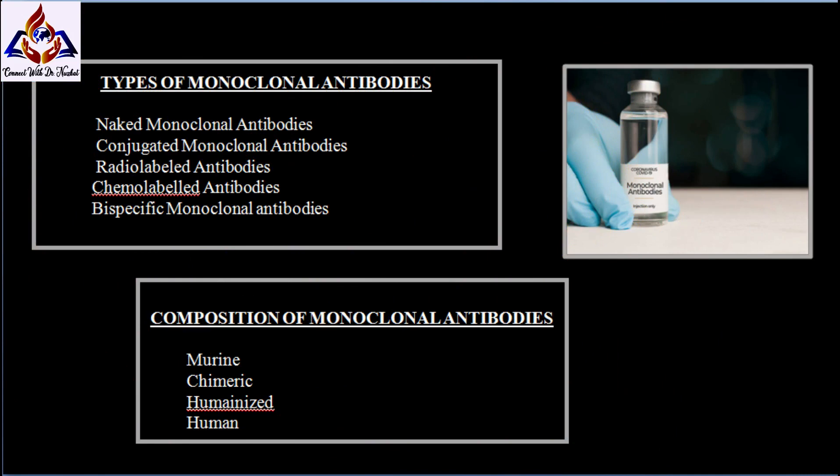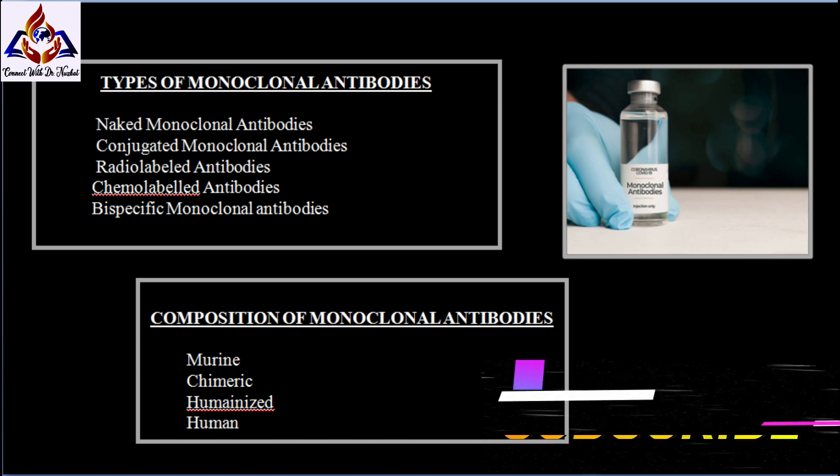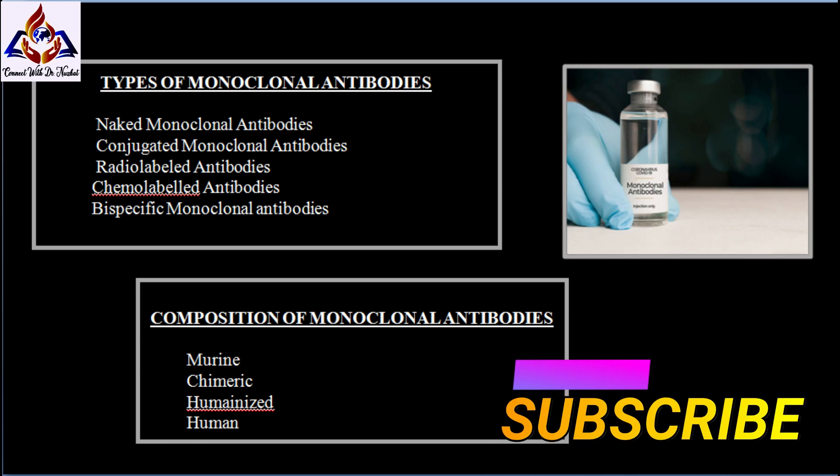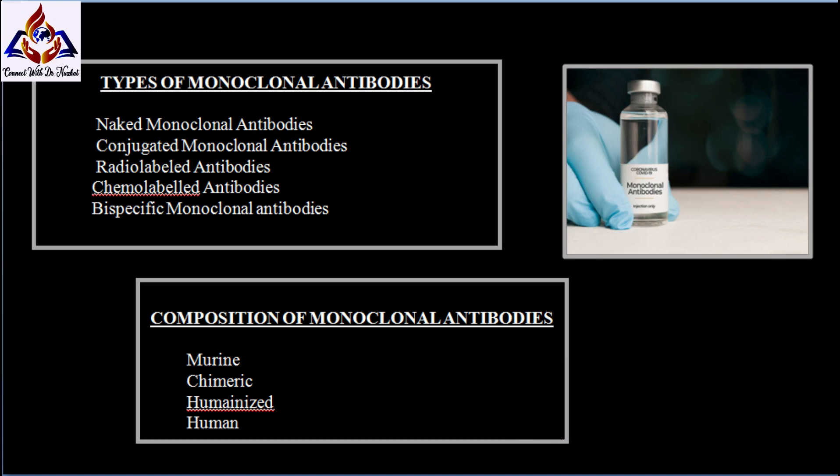Now, the types of monoclonal antibodies. The first type is naked monoclonal antibodies. These are antibodies that work by themselves — no drug or radioactive material is attached to them. These are the most common type of monoclonal antibodies used to treat cancer.